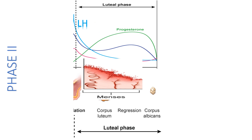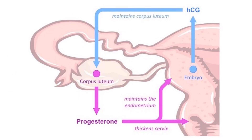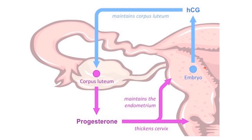Unless there is an alternative to LH — and that alternative exists if the woman becomes pregnant. If the oocyte is fertilized, the embryo secretes beta-hCG, which acts as a surrogate for LH, continuously stimulating the corpus luteum to secrete progesterone. Progesterone then maintains the uterus — the endometrium — until the placenta forms and takes over.